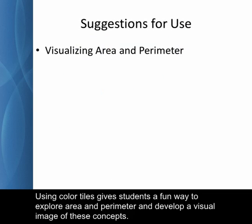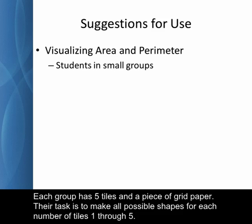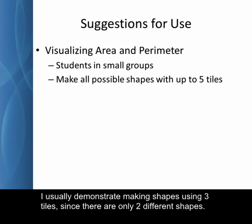Using color tiles gives students a fun way to explore area and perimeter and develop a visual image of these concepts. For this activity, I usually have my students work in small groups. Each group has five tiles and a piece of grid paper. Their task is to make all possible shapes for each number of tiles one through five. I usually demonstrate making shapes using three tiles, since there are only two different shapes.